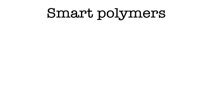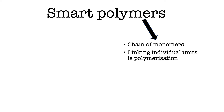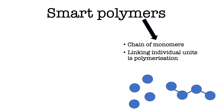Firstly, we must ask the question: what is a polymer? A polymer is a chain made up of many monomers. The process of linking all these individual units is called polymerization. This polymer can be made of lots of units of the same monomer, or a combination of different monomers.